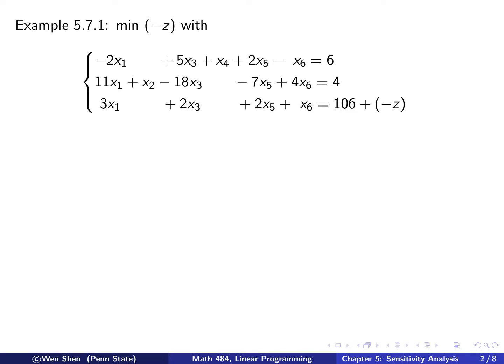Here, it's already the optimality criteria is met. So then we can conclude that the minimum of negative Z, that is the maximum of Z, is 106, is attained at this optimal solution, which is X2 is 4, X4 is 6, and the others are 0, as written here.